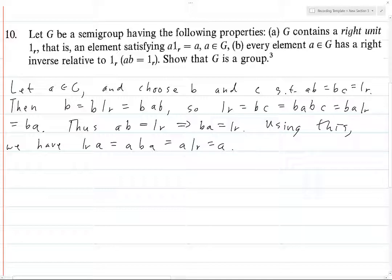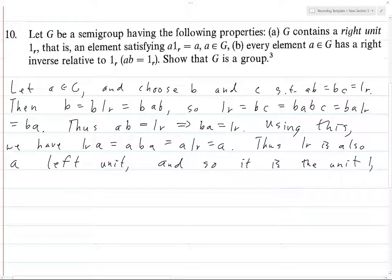So we've proven that—we assume that this equality holds, that if you multiply on the right by 1_r you get a, but now we have that if you multiply on the left as well. Thus, 1_r is also a left unit, and so it is the unit. We're going to call it 1 from now on because I don't want to have to write out r. So 1 is the unit, and we know that it is unique.